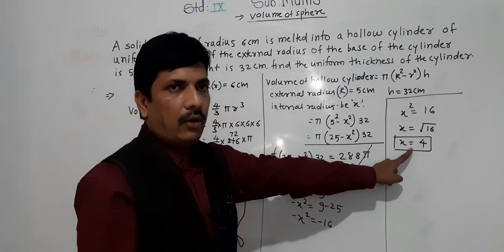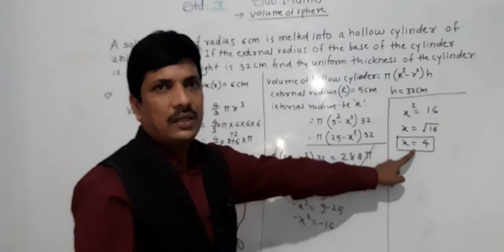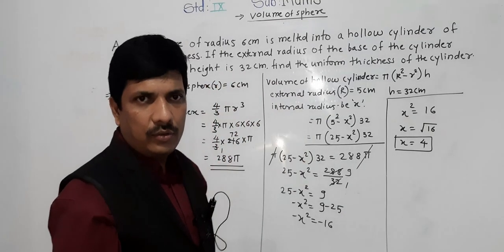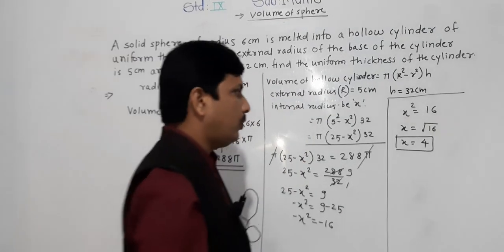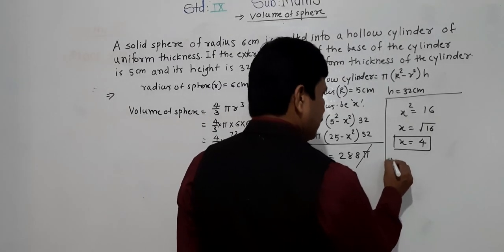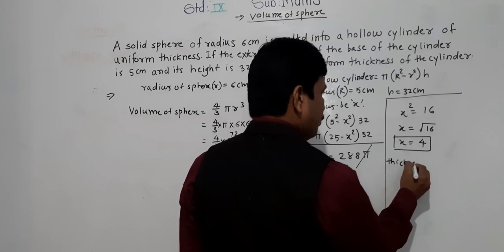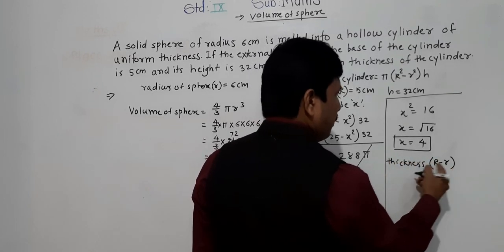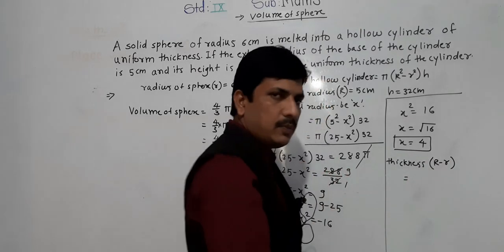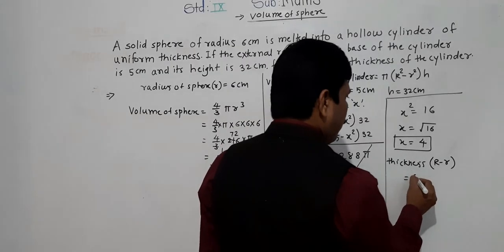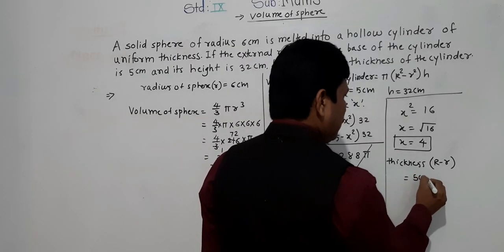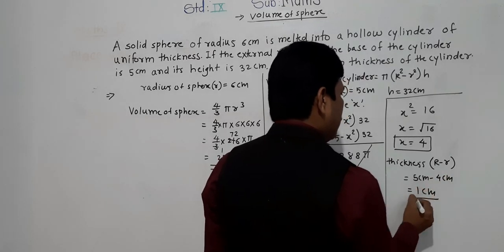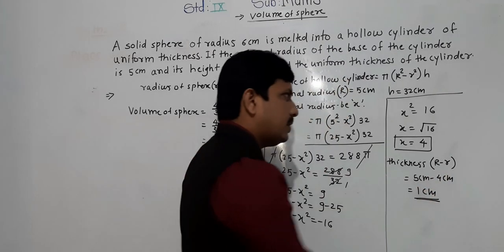Now we have the internal radius x equals 4 centimeter and external radius 5 centimeter. Thickness equals capital R minus small r, that is 5 centimeter minus 4 centimeter equals 1 centimeter. That is the uniform thickness of the cylinder.